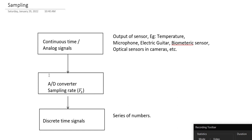Let's talk about converting continuous time or analog signals into discrete time signals, a process known as sampling. The source of continuous time signals can be lots of things. For example, the most common would be outputs of some sensors — examples would be temperature, microphone, electric guitar, biometric sensors, optical sensors, and the list goes on and on.